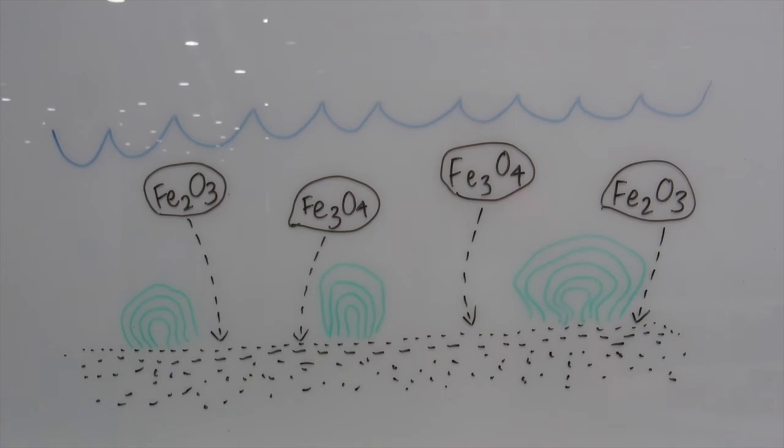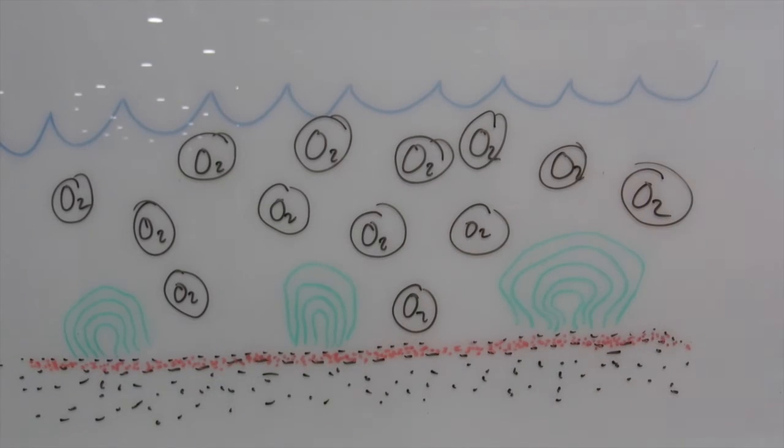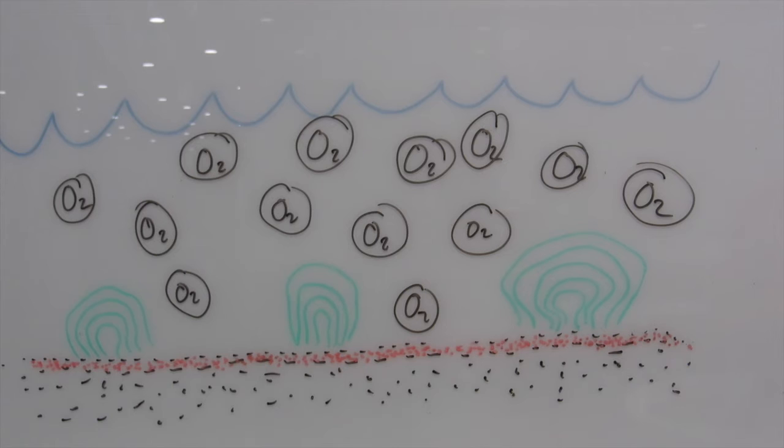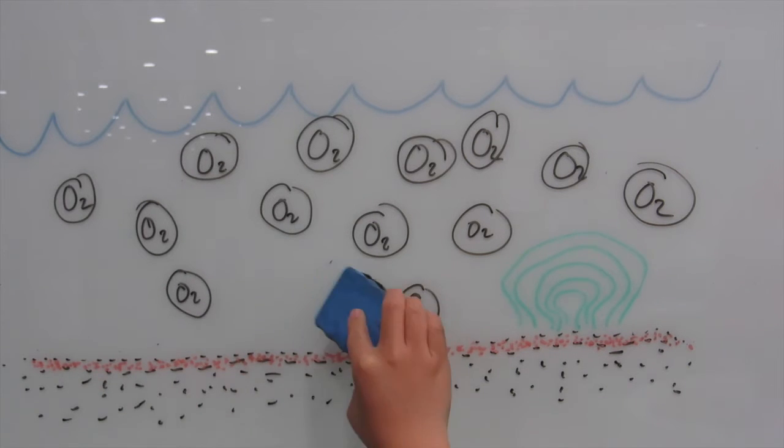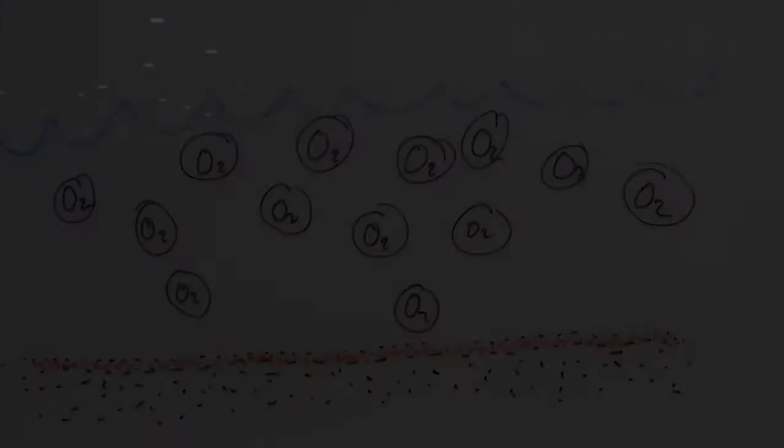This product then sinks to the ocean floors to create a red iron-rich layer. Eventually, the oceans ran out of iron ions, but the algae kept producing oxygen, which caused the oceans to become too toxic for the algae. Therefore, the algae population died off.